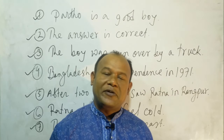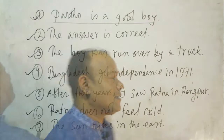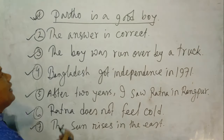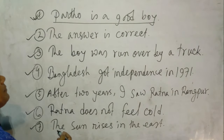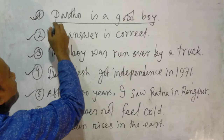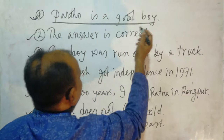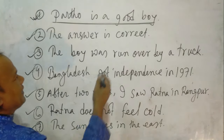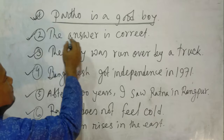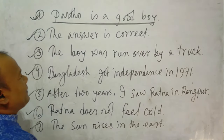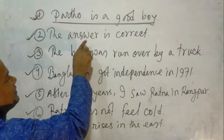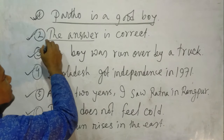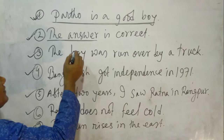Dear learners, now if we think about the sentences. Number 1: Partha is a good boy — this sentence expresses a statement; it describes about Partha. Number 2: The answer is correct — this sentence expresses an opinion; it is told about the answer.